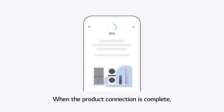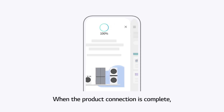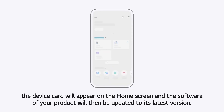When the product connection is complete, the device card will appear on the home screen and the software of your product will then be updated to its latest version.